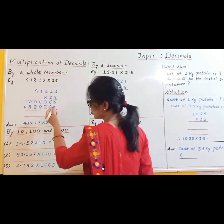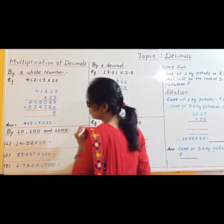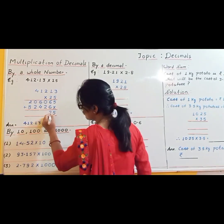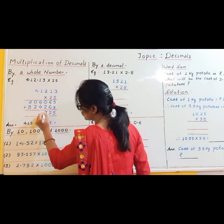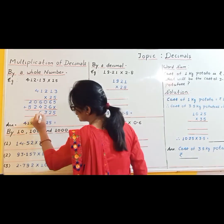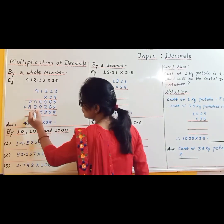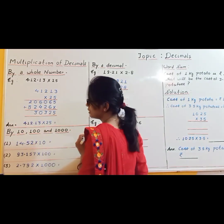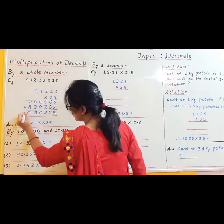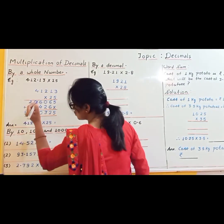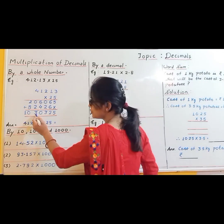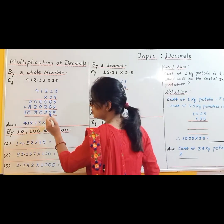Adding the rows: we get 5. 6 plus 6 is 12, carry 1. 2 plus 1 is 3. 6 plus 4 is 10, carry 1. 2 plus 1 is 3. 8 plus 2 is 10. So the product is 1030325.